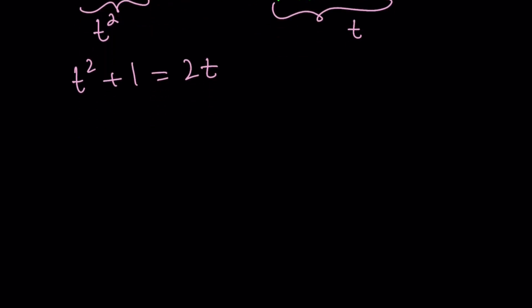t squared minus 2t plus 1 equals 0. That's the equation we end up with, which is a perfect square, right? This is t minus 1 quantity squared equals 0. And from here we get t equals 1.